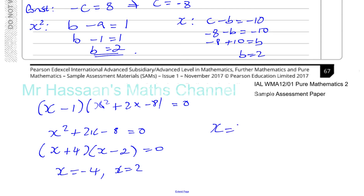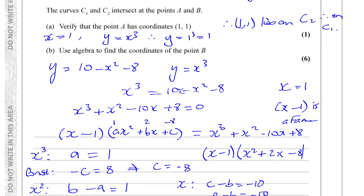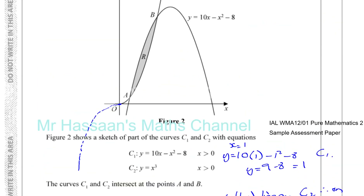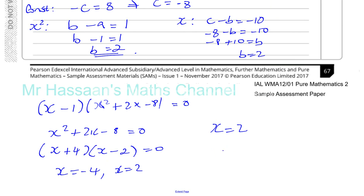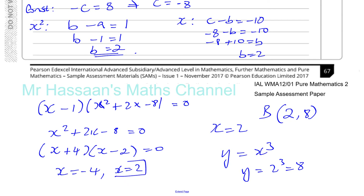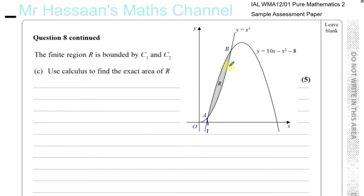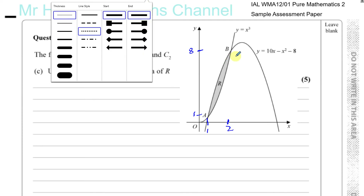With x equals 2, we find y using y equals x cubed: y equals 2 cubed, which is 8. So the coordinates of point B are (2, 8). Points A and B are at (1, 1) and (2, 8) respectively, which are the two intersection points in the positive region.